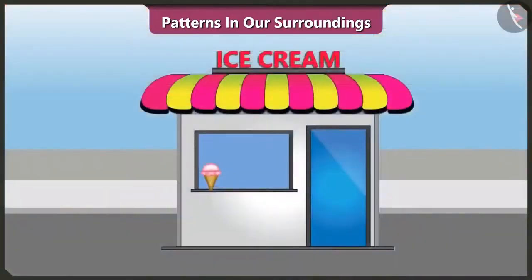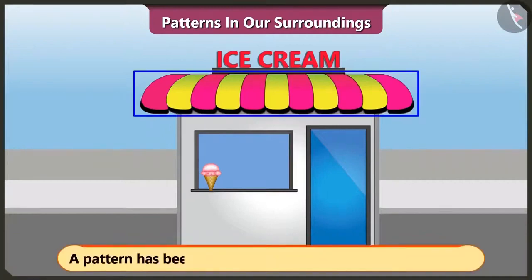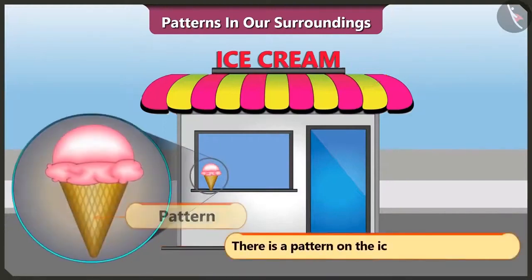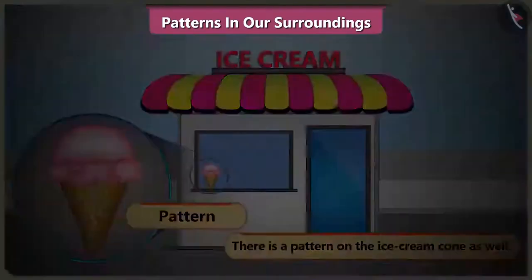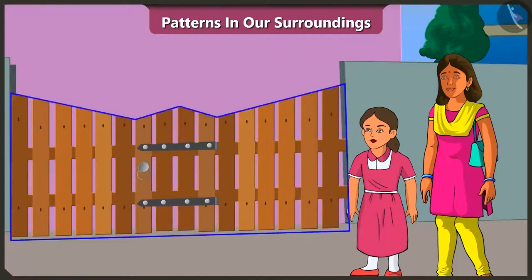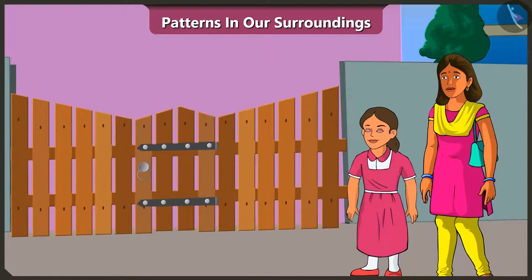Now look at the roof of this ice cream shop. Does it have a pattern? Yes, here two different color stripes have been used to make a pattern. And the ice cream cone also has a pattern. Yes, Vinny, we talked all the way and reached home so soon. Hey, the door of our house also has a pattern. The strips here have a pattern of big to small, small to big — initially big to small and then small to big strips.